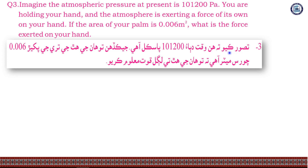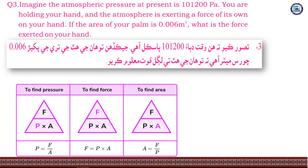The atmospheric pressure is 101,200 Pa and the area of the palm is 0.006 square meters. We need to find the force exerted on the hand using the formula F = P × A.